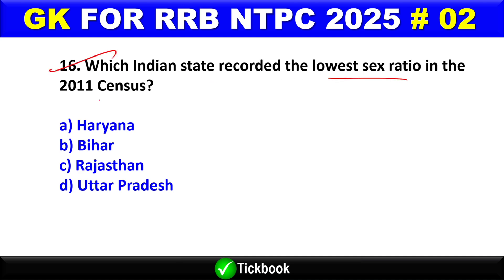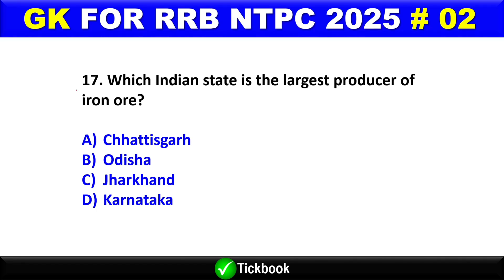Question number 16: Which Indian state recorded the lowest sex ratio in the 2011 census? Option A is the right answer — Haryana. Question number 17: Which Indian state is the largest producer of iron ore?